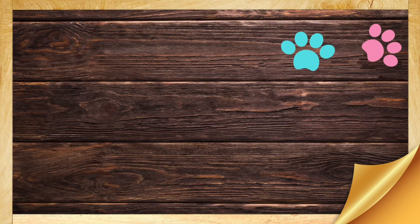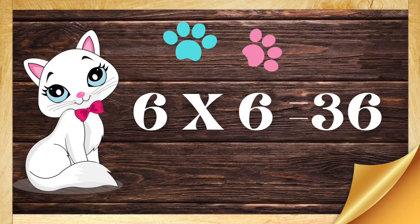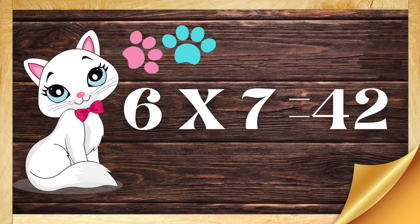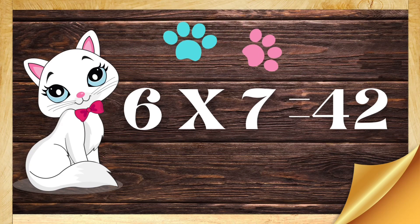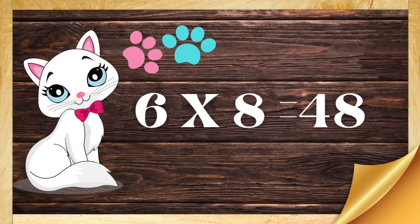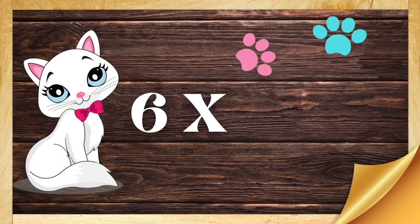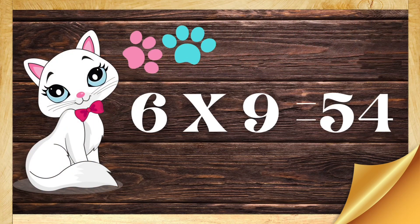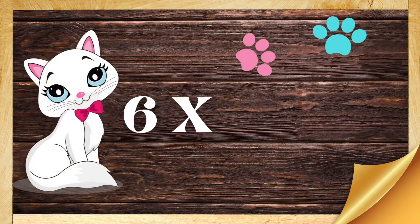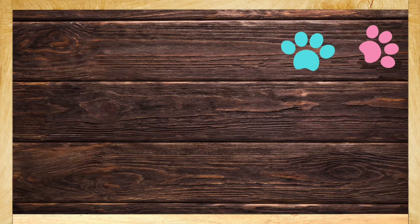Six fives are thirty. Six sixes are thirty-six. Six sevens are forty-two. Six eights are forty-eight. Six nines are fifty-four. Six tens are sixty.